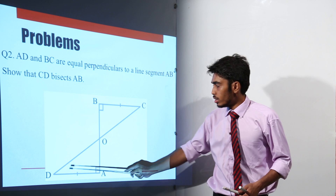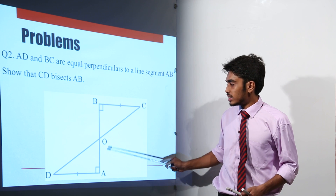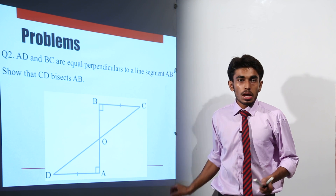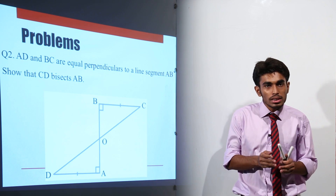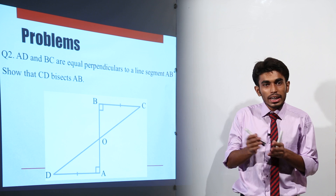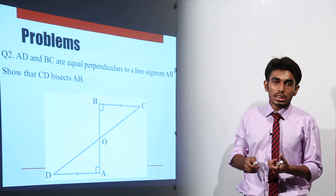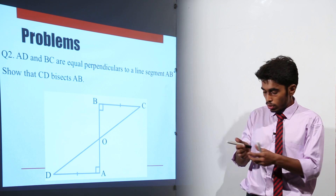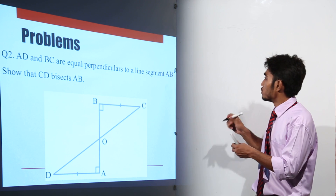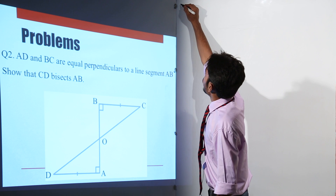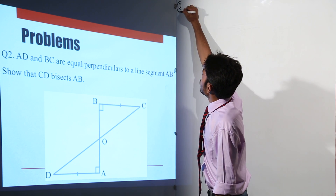Where is CD? CD is here. This bisects AB. What do I mean by bisect? Bisect means dividing it into two equal parts, or two equal halves. So let me draw the triangle for you.